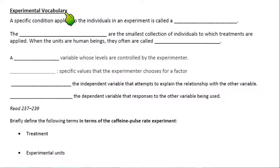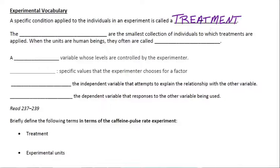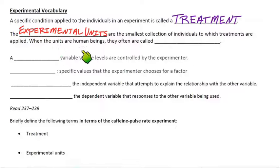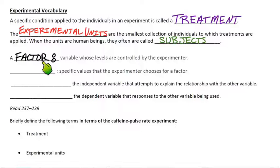Now for experimental vocabulary. A treatment is the specific condition applied to the individuals in an experiment — what you actually impose on them. Experimental units are the smallest collection of individuals to which treatments are applied. When the units are human beings, they're often called subjects — essentially meaning the same thing. A factor is a variable whose levels are controlled by the experimenter — in the caffeine experiment, one factor would be caffeine.